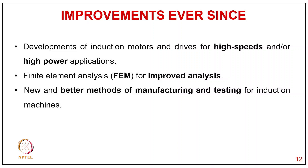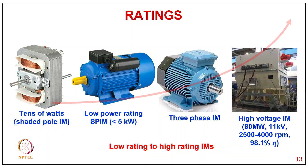Coming to typical ratings, they start from tens of watts especially in single-phase induction motors, and go as high as 80 megawatts at 11 kV with varying speeds of 2500 to 4000 RPM and a good efficiency of 98.1 percent. You can see how the ratings have increased exponentially over the years for induction motors.